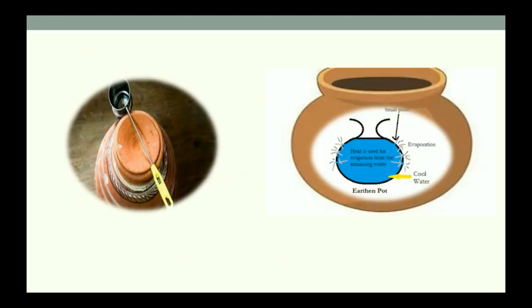We know the water in an earthen pot gets cool. The water in the earthen pot gets cooled because of evaporation of water drops coming out through small pores of the pot. This evaporation phenomenon is applied in Vapor Compression Refrigeration System.